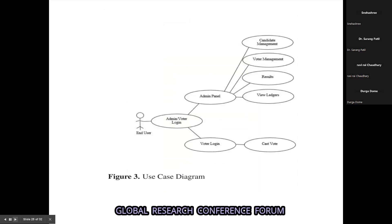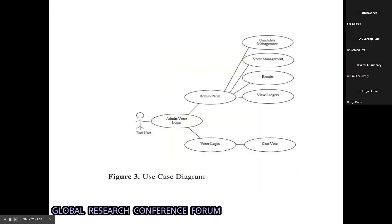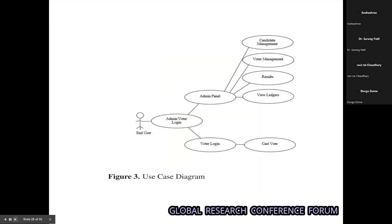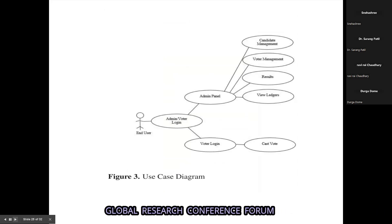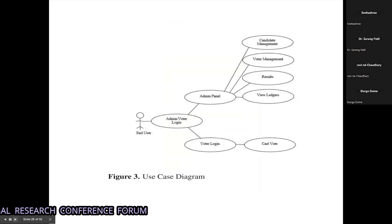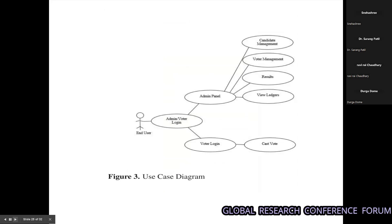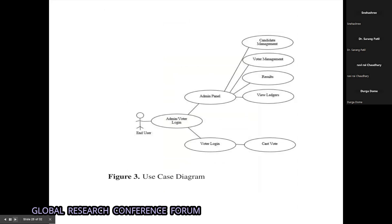This is our use case diagram. Users can be admin or voters. The admin panel has certain accessibility features like credential management, voter management, result viewing, and ledger viewing. Voters log in and cast a vote.